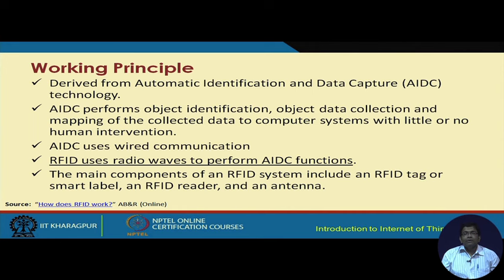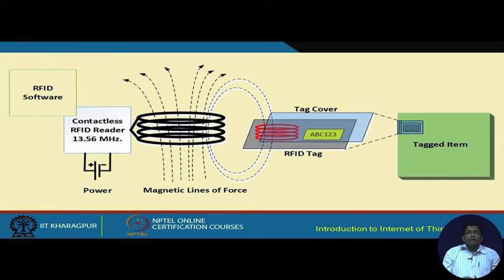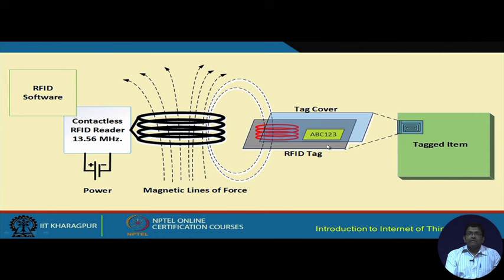RFID is fully wireless, whereas AIDC uses wired communication. RFID uses radio waves for wireless communication to perform the functions also performed by AIDC. To understand how RFID works: consider a tagged item such as clothing in a shopping mall. The cloth is tagged with an RFID tag, which consists of circuitry, a coiling mechanism, and a polymer or plastic cover that protects the internal circuitry.